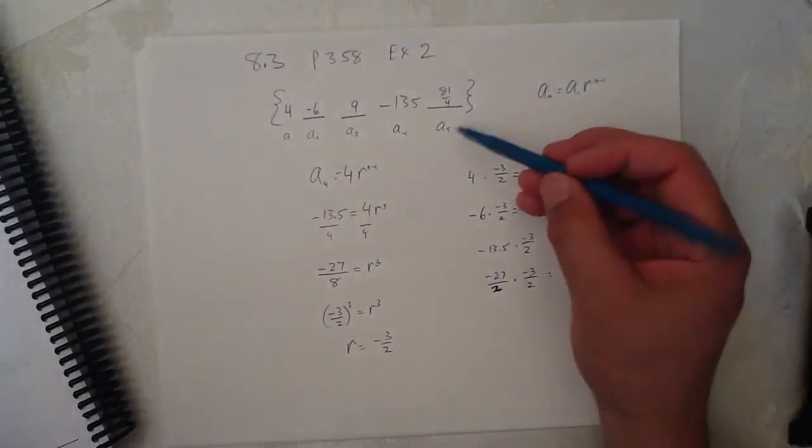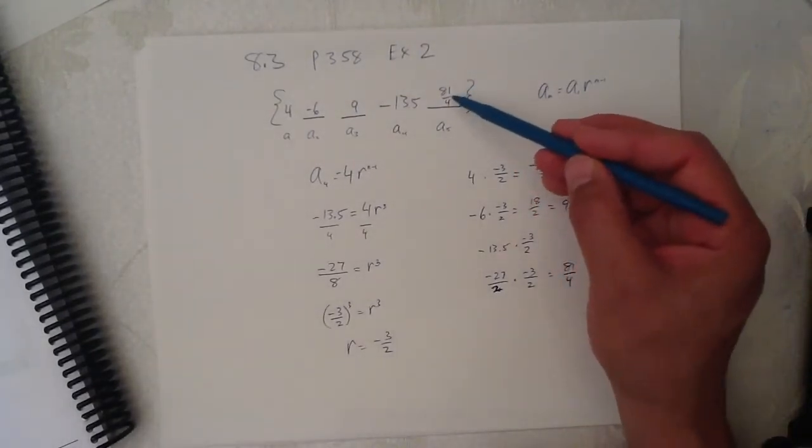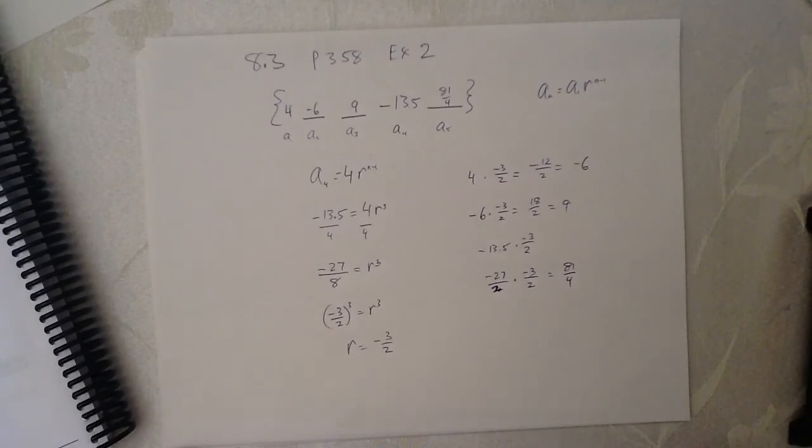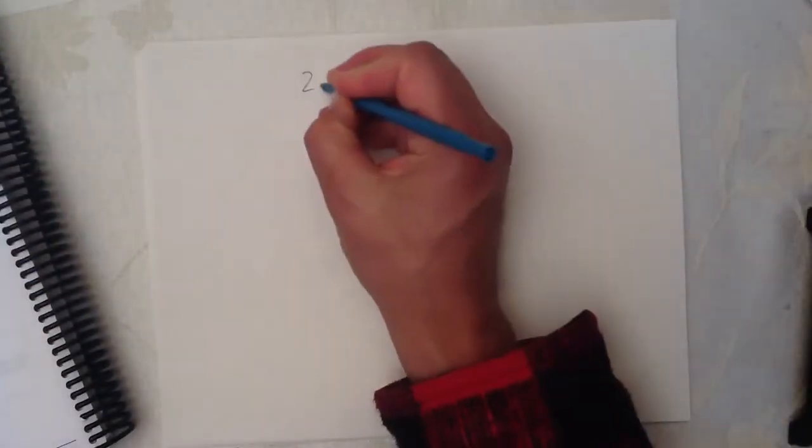So, negative 27 times negative 3 is 81, 2 times 2 is 4, 81 over 4 is the answer there. And what is 81 over 4? It looks like a 20 and 1 quarter. I'd like to represent it as 81 over 4. So, that is D. Should we do one more? Let's do one more.